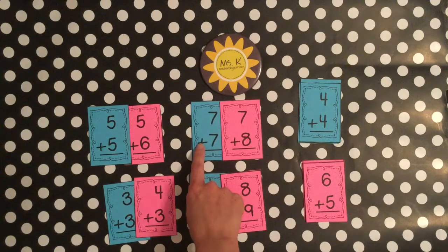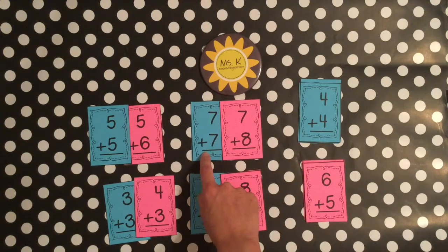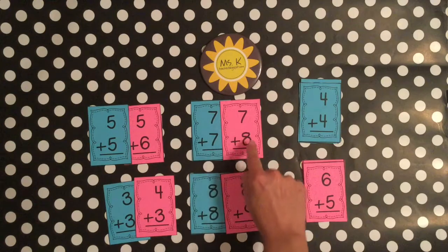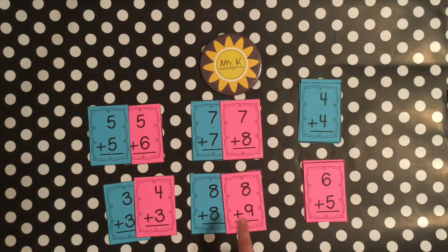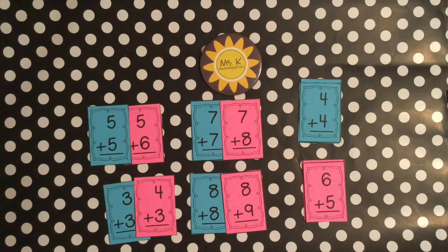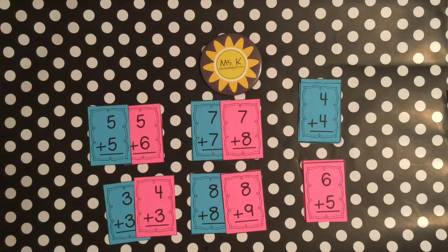But seven plus seven was super easy for me to learn because there's fourteen and it's a double. Fourteen, and then seven plus eight is one more, that's fifteen. Eight plus eight is sixteen. Eight plus nine is one more, seventeen. So that makes it so much easier for students to learn, and they are able to pick up on that pattern.